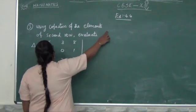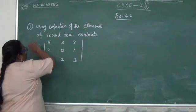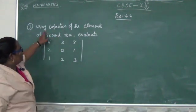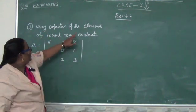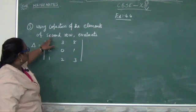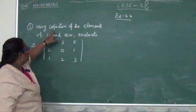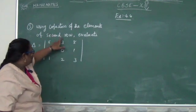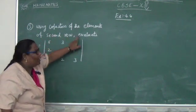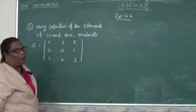This is exercise 4.4, third sum, using cofactor of the element of second row. You should find out the cofactor of the second row and evaluate it.